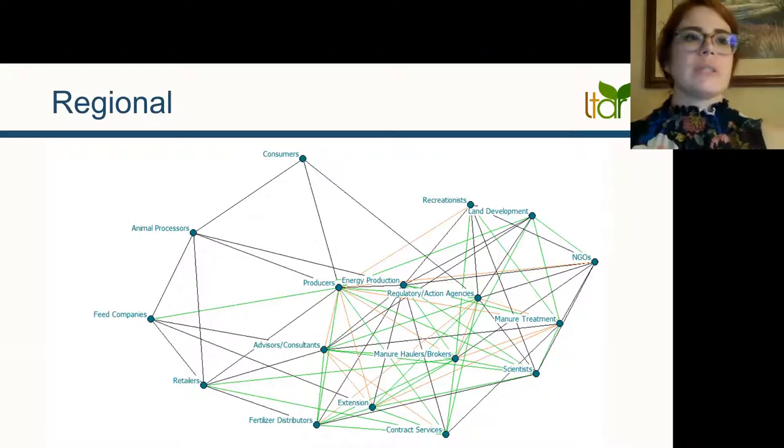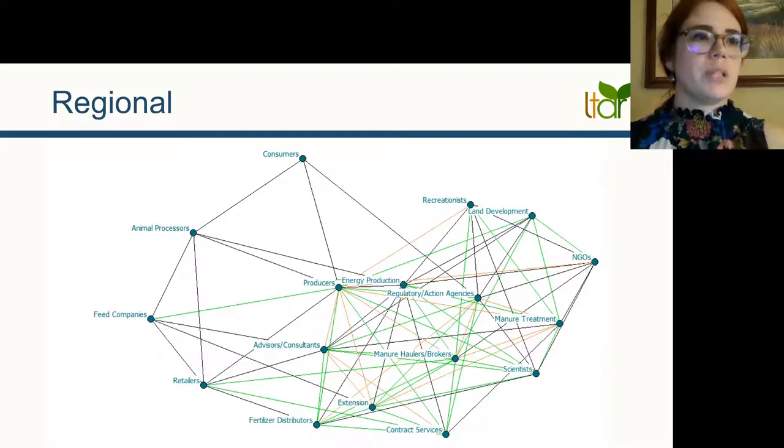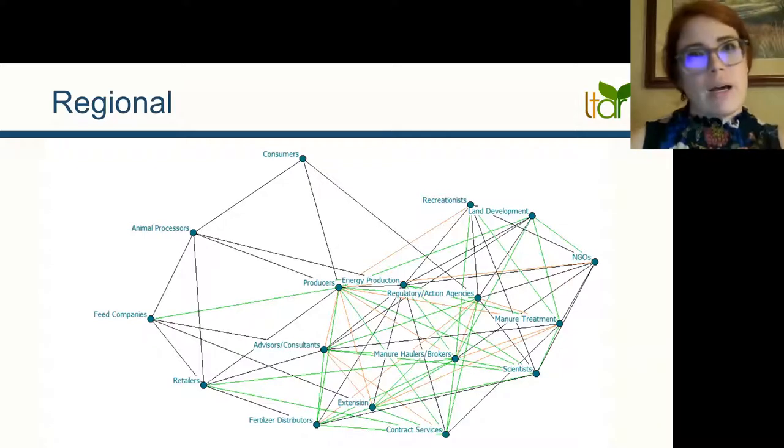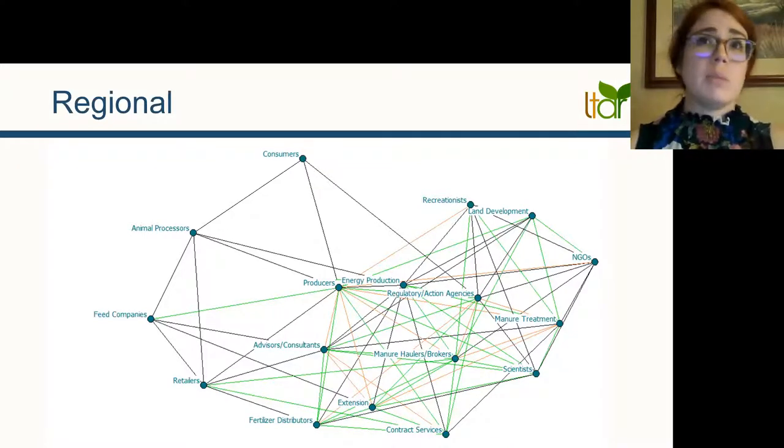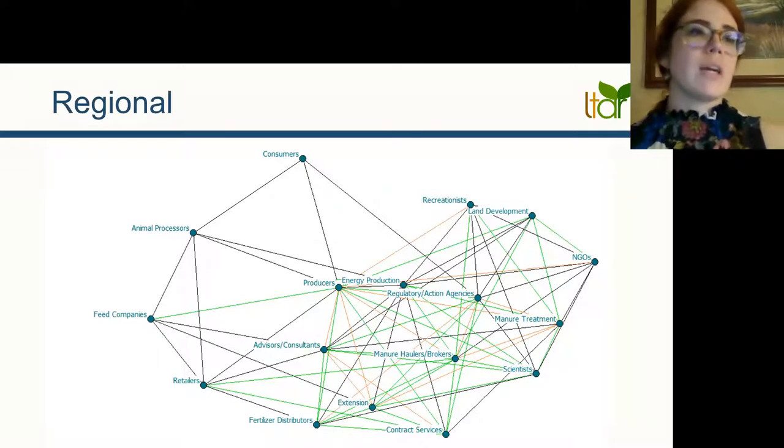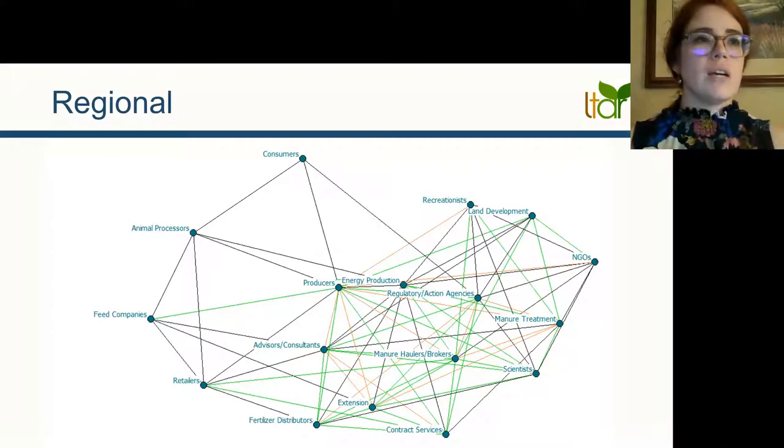Similar to local scale manure sheds, policymakers and regulations can directly influence manure management practices at regional scales. Policymakers do not act within a vacuum. That connection is going to be two-way. Producers, recreationists, NGOs, developers, and consumers all influence rules governing manure use. So to effect change at the scale of a regional manure shed, all the actors just mentioned and more, as you can see in this figure, need to be involved.